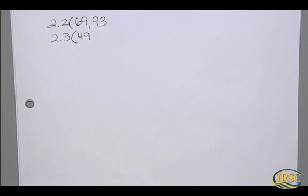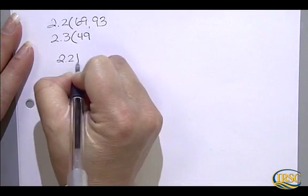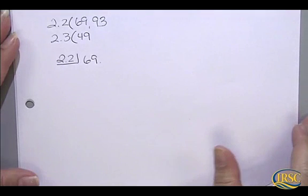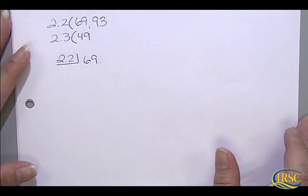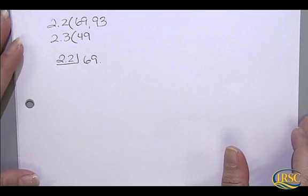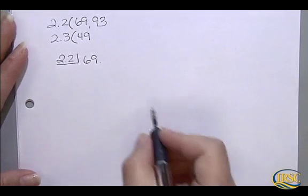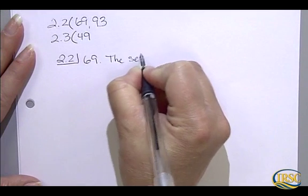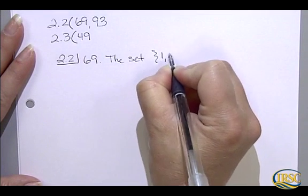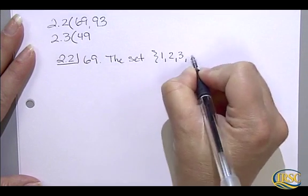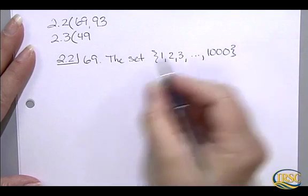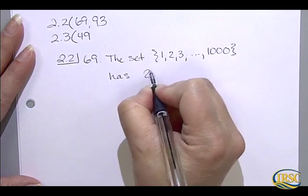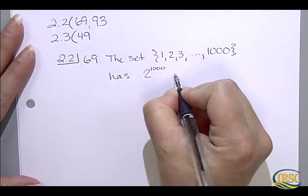Starting in section 2.2, with number 69. It says determine whether each statement is true or false, and if it's false, make the necessary changes to produce a true statement. So it says the set of 1, 2, 3, dot dot dot to a thousand has 2 to the 1,000 proper subsets.